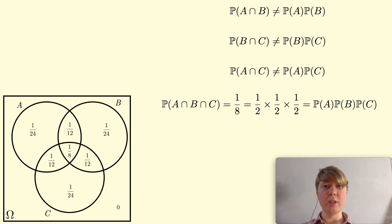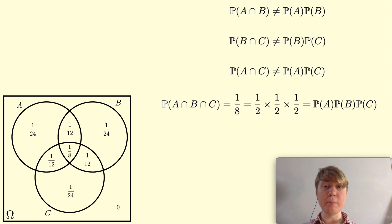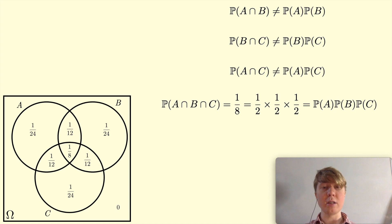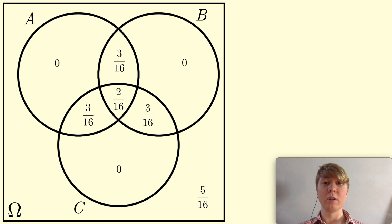I wasn't fully satisfied with this example because I couldn't think of a simple real-life scenario or game that would make those particular probabilities feel intuitive — do let me know if you think of one! But I was able to find other examples. I found a few more nice symmetrical ones where you can check the events aren't pairwise independent, yet the probability of A and B and C equals one-eighth and each of A, B, C has probability one-half, satisfying our condition.